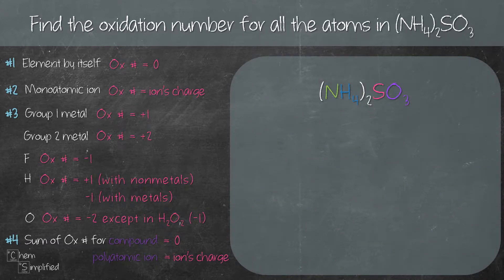According to rule number 3, the oxidation number of H is plus 1 and for O, it's minus 2 in a compound.